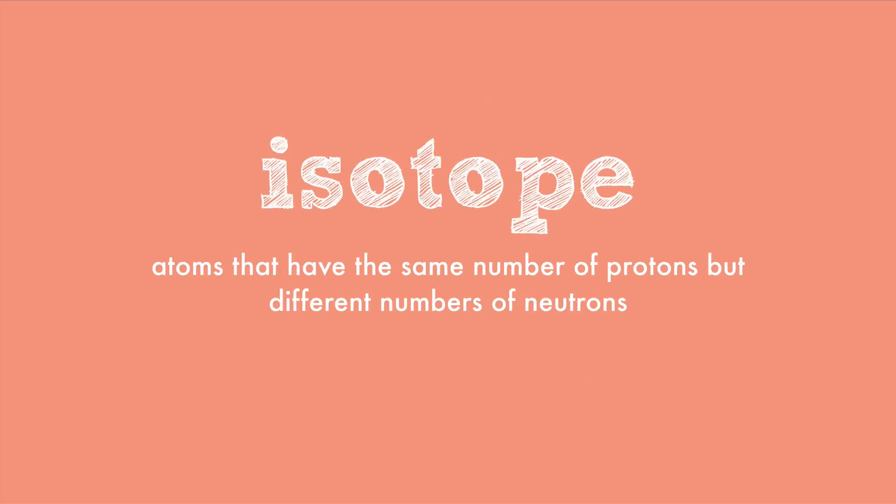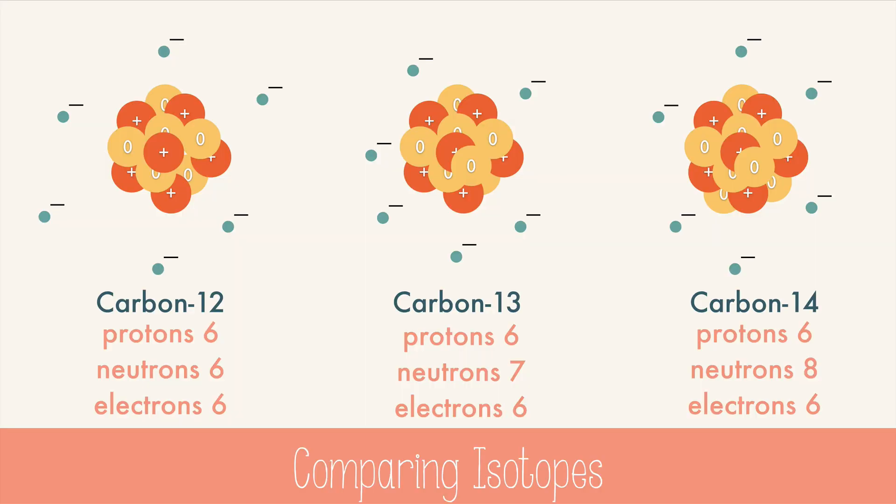An isotope is an atom that has the same number of protons but different numbers of neutrons. Isotopes of an element are still the same element, just like apples of different colors are still apples. Here are 3 different isotopes of carbon. All of them have 6 protons and 6 electrons. The only difference is the number of neutrons. Carbon 12 has 6, carbon 13 has 7, and carbon 14 has 8 neutrons.